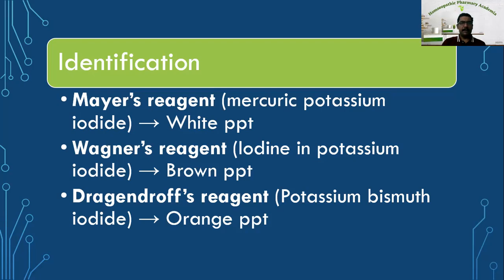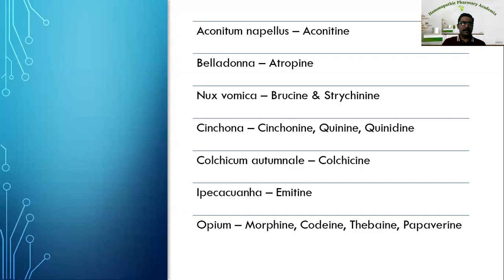Now let us see some important examples of alkaloids from common herbs used as drugs in homeopathy. Aconitum napellus — alkaloid is aconitine. Belladonna — atropine. Nux vomica — brucine and strychnine. Cinchona — cinchonine, quinine, quinidine. Colchicum — colchicine. Ipecacuanha — emetine. Opium — morphine, codeine, thebaine, papaverine. These are some very important examples of alkaloids.